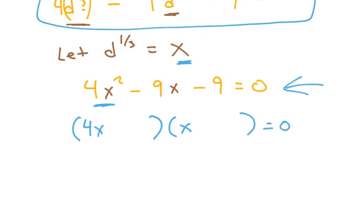And then we have to do the same. Now after we do say 4x times x is 4x squared, we work on the back. So we say what times what is 9. In this case, I'm going to go with 3 and 3 because 3 and 3 is 9.